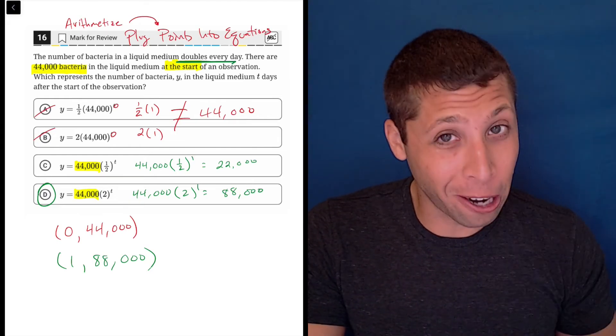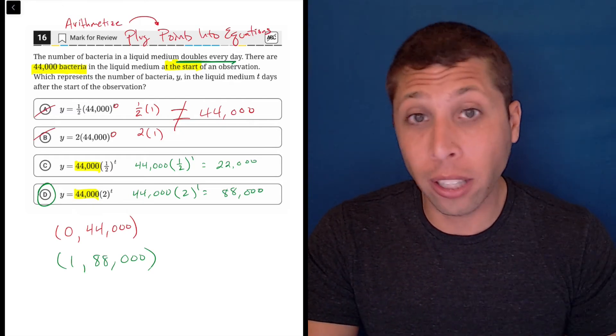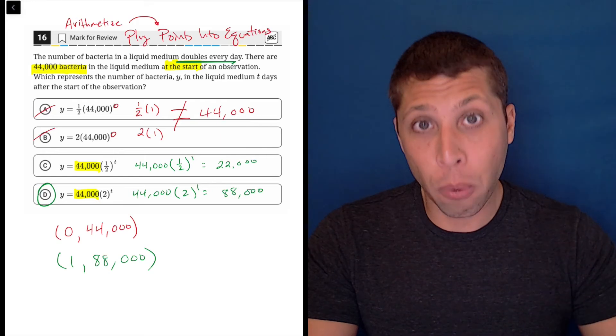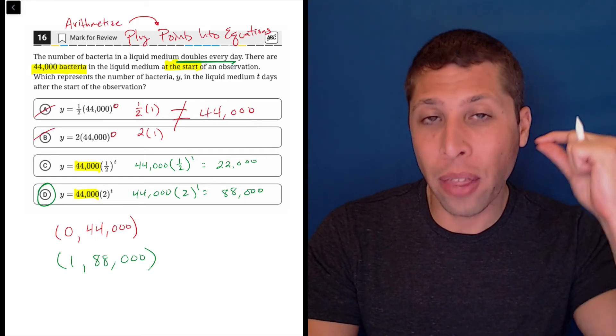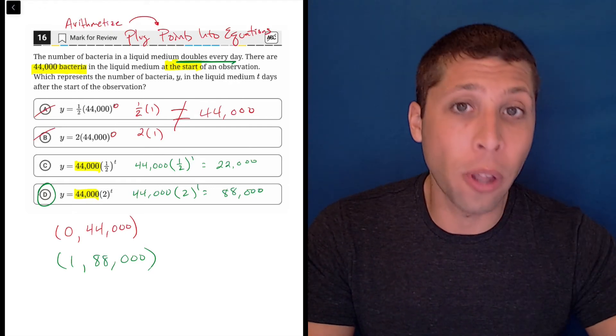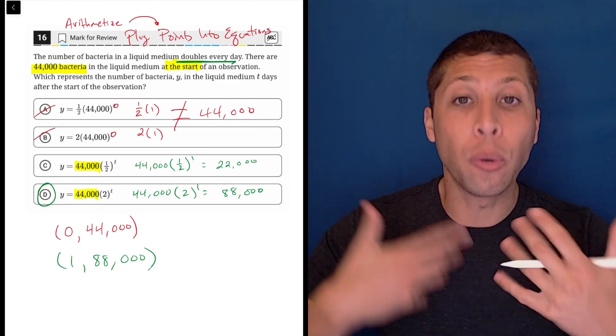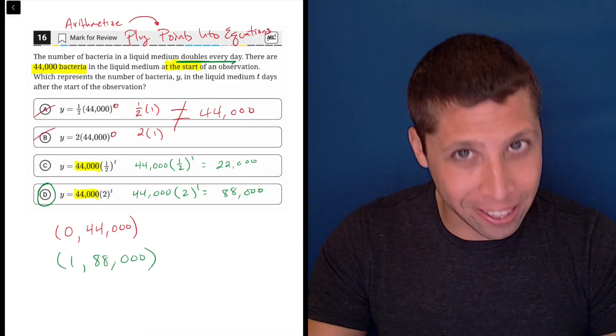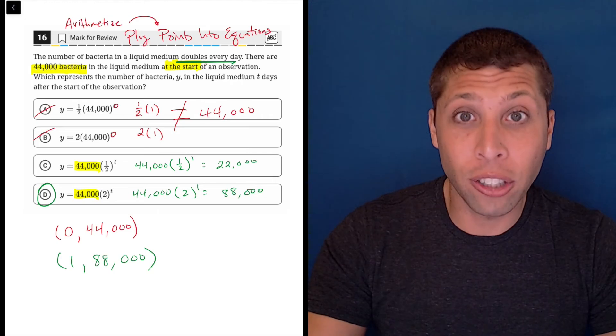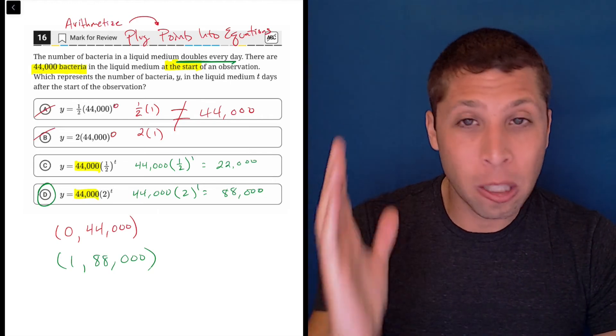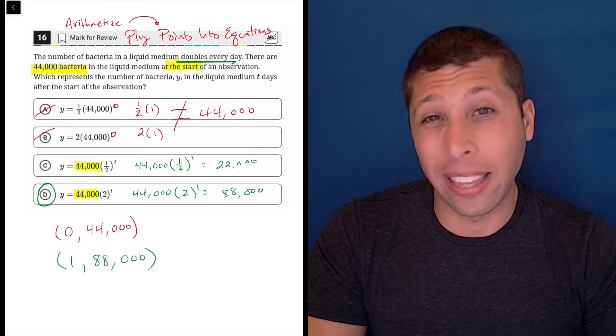But if you're ever unsure, especially as you get through the test and you know that traps are kind of lurking there, use the story to come up with some points that you can test in those equations. Let your mind stop having to think about it and let the numbers do the thinking for you. If you see the equation kind of work or not work, you can very confidently pick the answer or get rid of it. So it's a very valuable strategy throughout the entire SAT, but especially in exponentials where our brains are just not really that great at thinking about them.